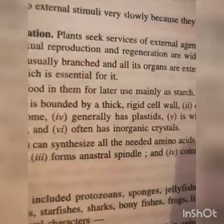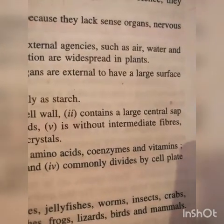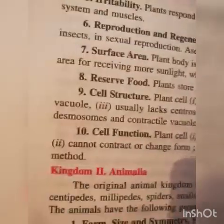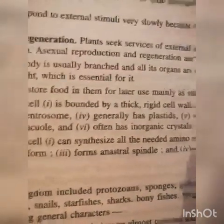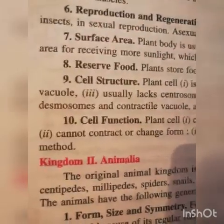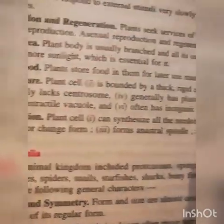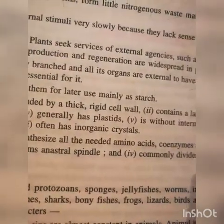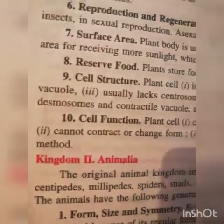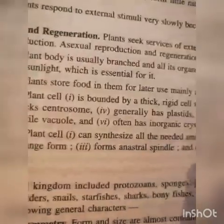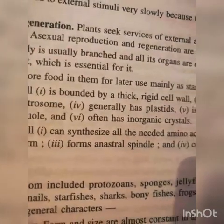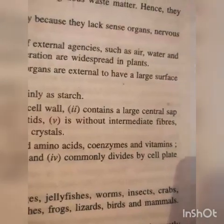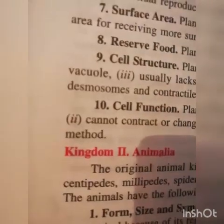Plant cells usually lack a centrosome, generally have plastids, are without intermediate fibers, desmosomes, and contractile vacuoles, and often have inorganic crystals. Cell function: Plant cells can synthesize all needed amino acids, coenzymes, and vitamins; they cannot contract or change form because of the presence of a cell wall; they form an anastral spindle and commonly divide by the cell plate method.